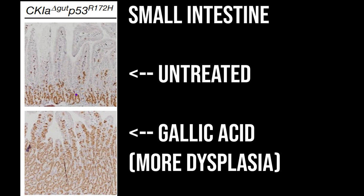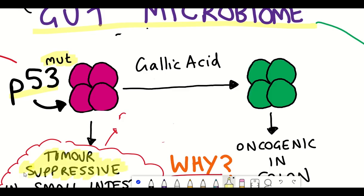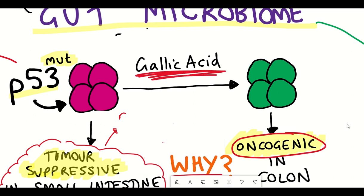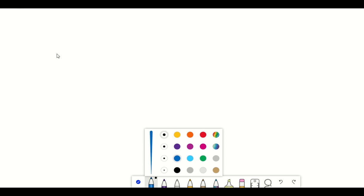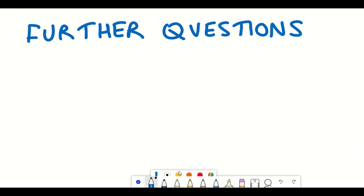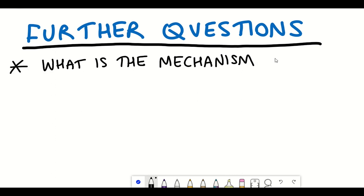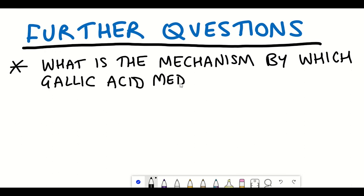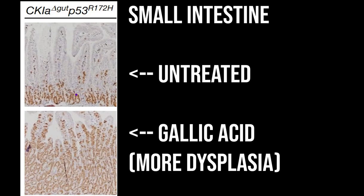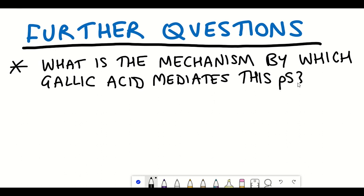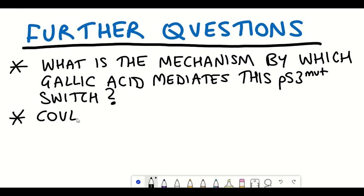I've cut a lot of their results short, but I think the study is really interesting because it raises a lot of fascinating questions. Firstly, it leaves us on a bit of a cliffhanger because it's still unclear what the actual mechanism mediating this switch between a tumour suppressive and an oncogenic mutant p53 is. We know from the study that gallic acid seems to be responsible, but is gallic acid interacting with p53 directly, with other molecules, or with immune cells that could have a secondary indirect impact on intestinal cells?